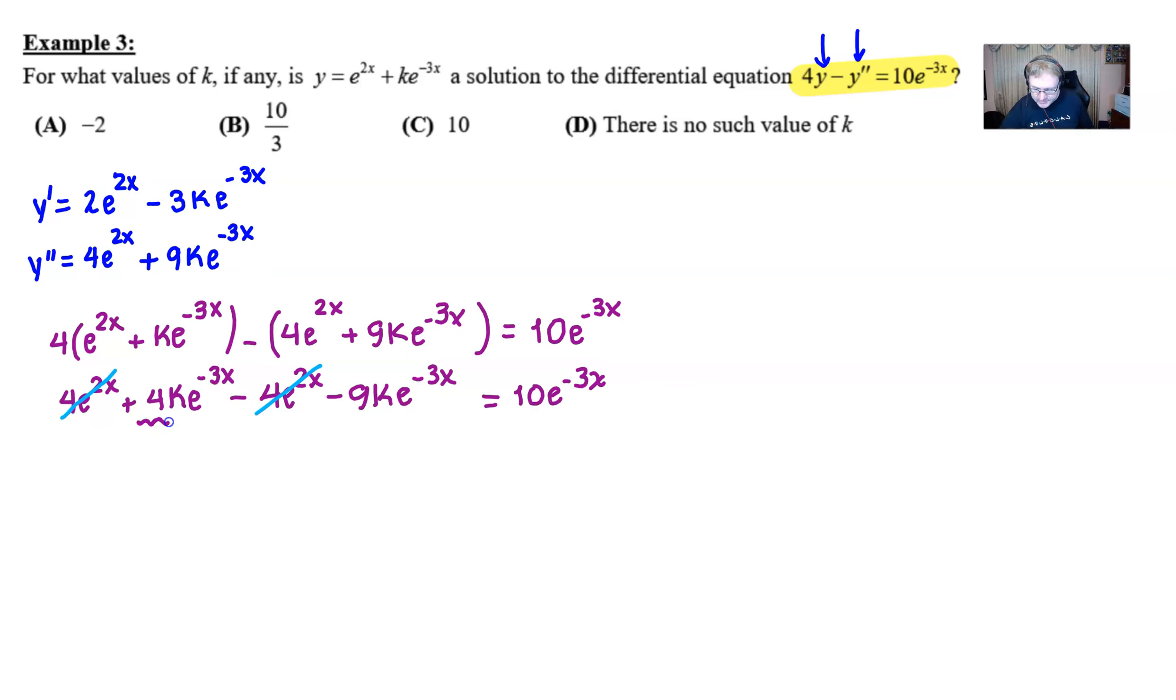As far as these other two terms, I believe that they are like terms. They both have the same base e, the same exponent, negative 3x. All we have to do is add the coefficients in front. 4k minus 9k is negative 5k. And now, we are on the way.